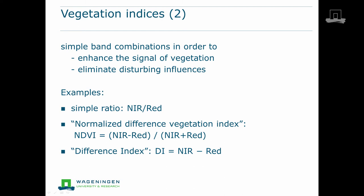Another example is the so-called Normalized Difference Vegetation Index, which takes the ratio between the difference of near infrared and red reflectance and the sum of both. Its value will be around zero for both wet and dry soils. Also, a doubling of irradiation will still yield the same value for this index, making it one of the most often used vegetation indices in remote sensing applications.